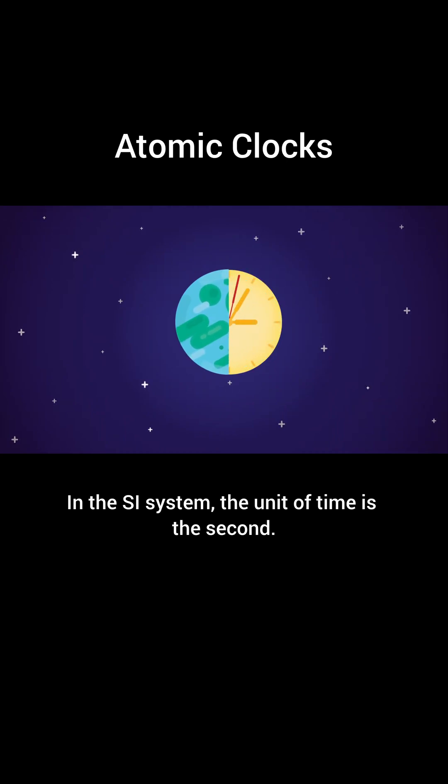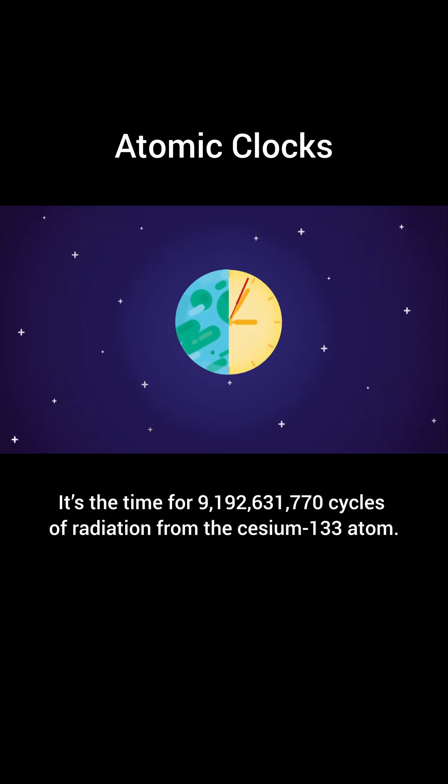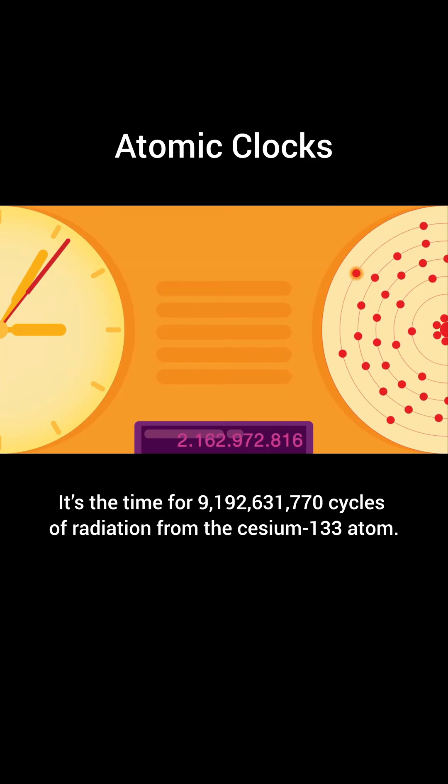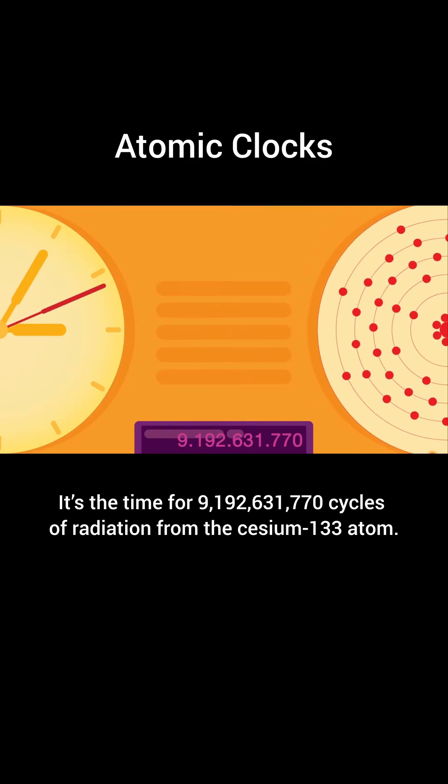In the SI system, the unit of time is the second. It's the time for 9,192,631,770 cycles of radiation from the cesium-133 atom.